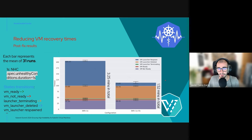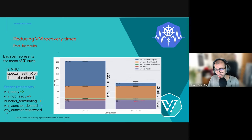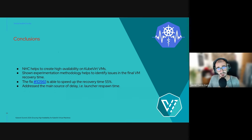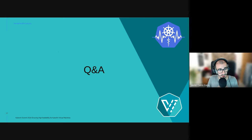We can identify other improvement areas as well. For instance, the launcher deleted time can be improved by using another remediator such as FAR. In the case of the VM not-ready time, this is a fixed timeout and there is not much we can do there. Finally, some conclusions: NHC helps to create high availability for Kubernetes VMs. The experimentation methodology helps identify issues in the total recovery time. The fix is able to speed up the recovery time by 55%, and we have addressed the main source of delay, which is the launcher respawn time. Thank you for listening.